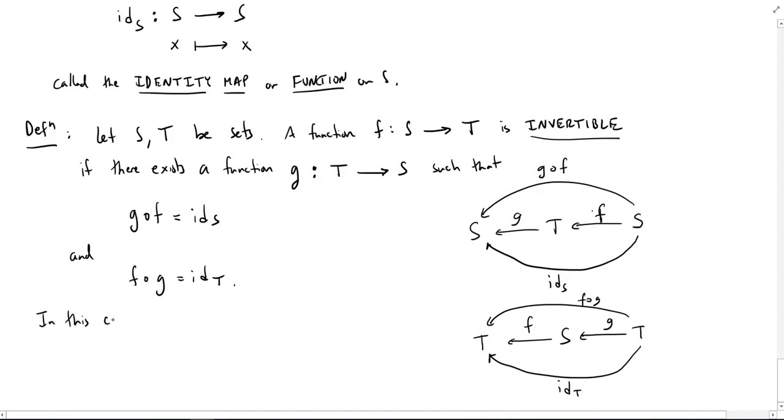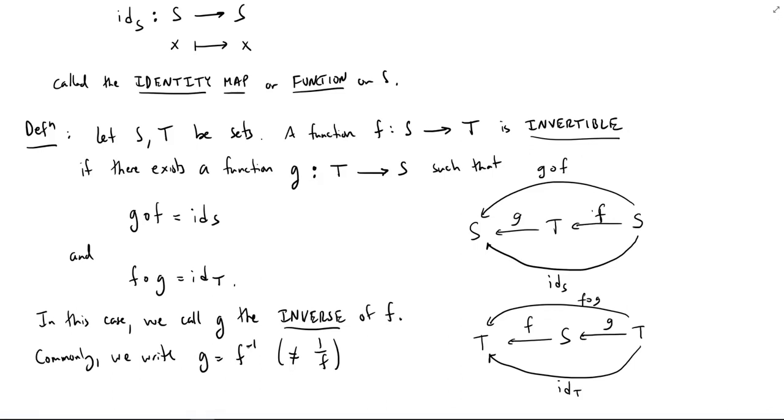And in this case, we call g the inverse of f. And of course, once you know that g is the inverse of f, then of course also f is the inverse of g. Commonly we write g equals f to the negative 1. So note, this does not equal 1 over f. This notation f to the negative 1 is also used for the preimage of an element under f, which is actually a set. So you just have to be a little bit careful. But once you know your function is invertible, then usually it isn't so much of a problem to distinguish.